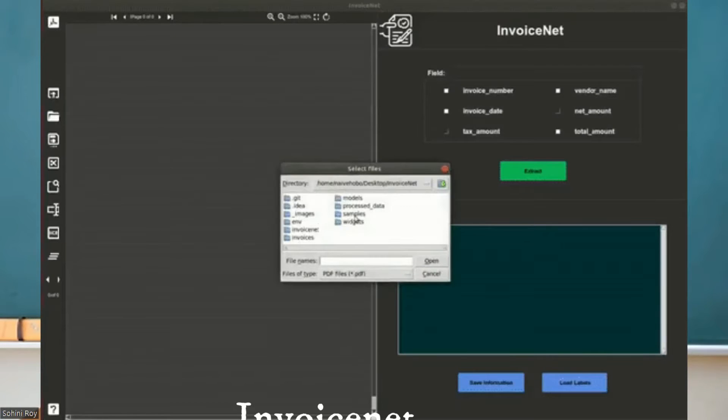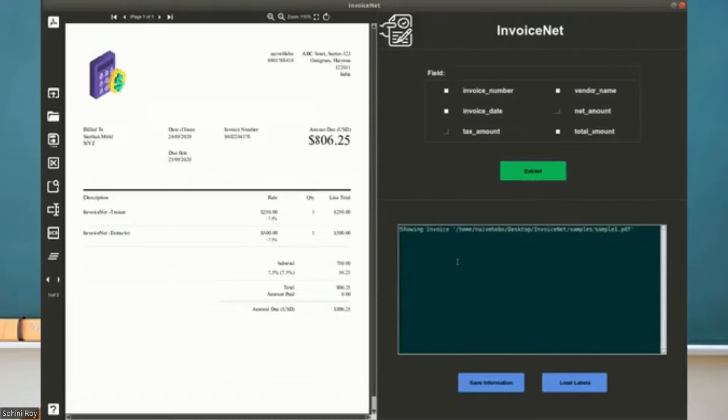So to give you an example of different deep learning models for ICR, you can see models such as InvoiceNet, which is again a deep learning model.